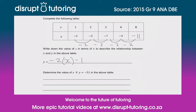Now they're asking us to put this relationship to the test and determine the value of x if y is equal to -51. We form our own algebraic equation: we place -51 in y's position, giving us -51 = -2x - 1. We've taken 51 and placed it where y is.